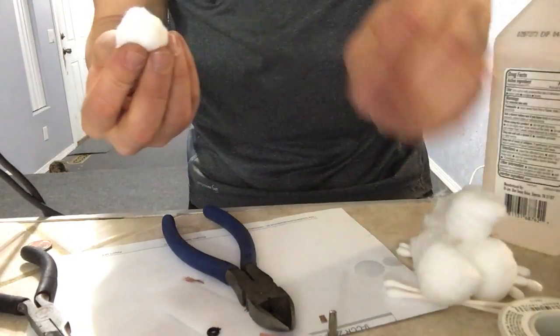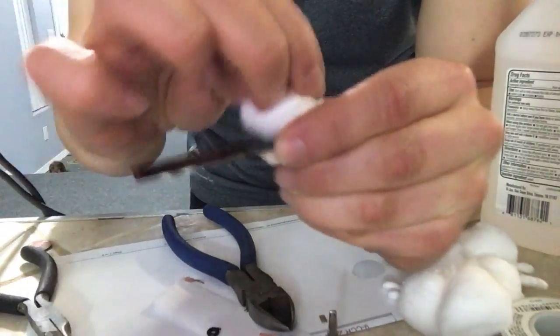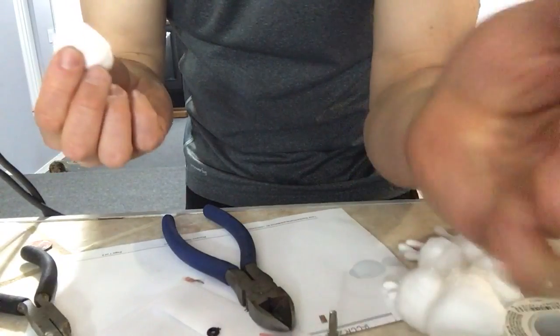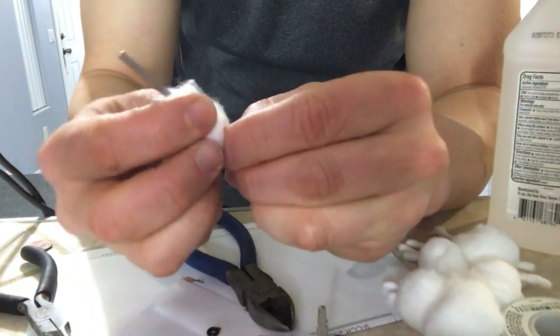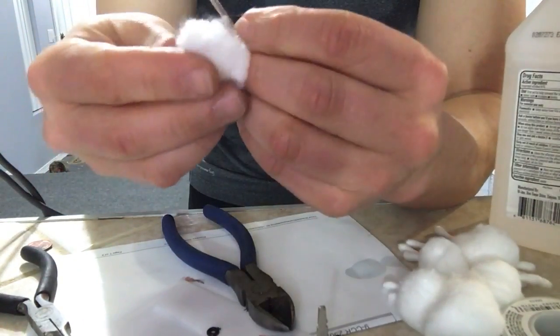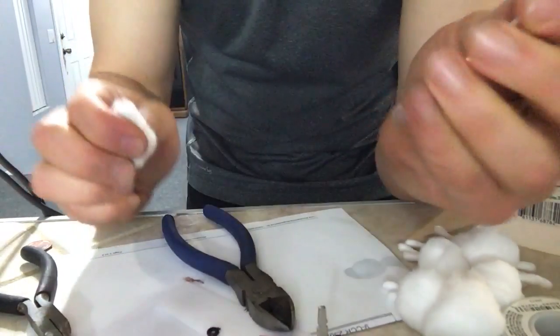So what we're going to do is clean off the board. Rubbing alcohol won't do any damage because it evaporates, so we're going to clean off the bars and make sure that we're getting all the crap off of these bars.